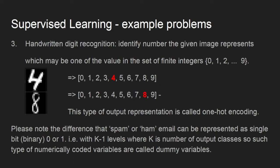Please note the difference that spam or ham email can be represented as a single bit, zero or one, that is with K minus one levels where K is number of output classes. So such type of numerically coded variables are called dummy variables, which are different than the one-hot encoding as shown here.